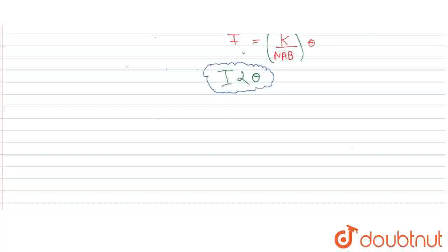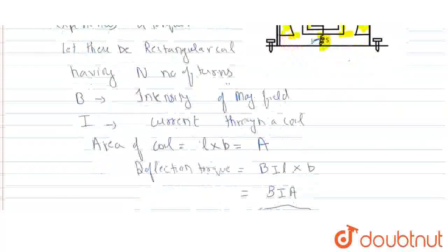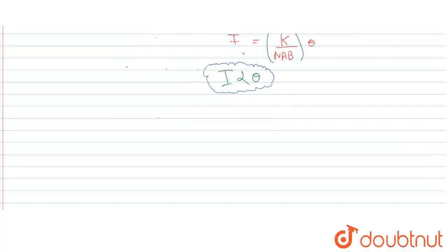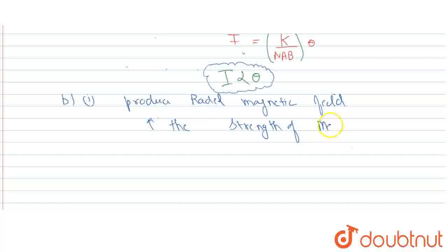Now for Part B: why is it necessary to introduce a cylindrical soft iron core inside the coil of a galvanometer? The main purpose of the soft iron core is that it produces a radial magnetic field and also increases the strength of the magnetic field.